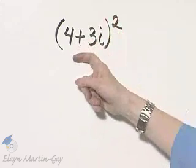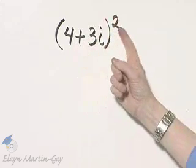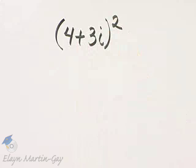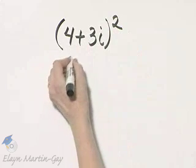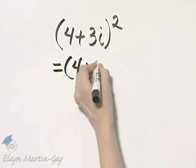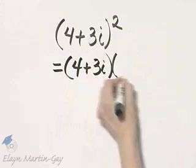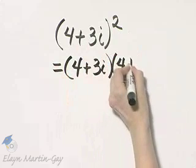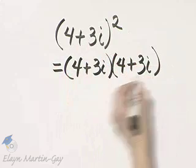Here we are squaring a complex number, and you can think of this as squaring a binomial. I'm going to go ahead and write the binomial down twice. That means 4 plus 3i times 4 plus 3i.